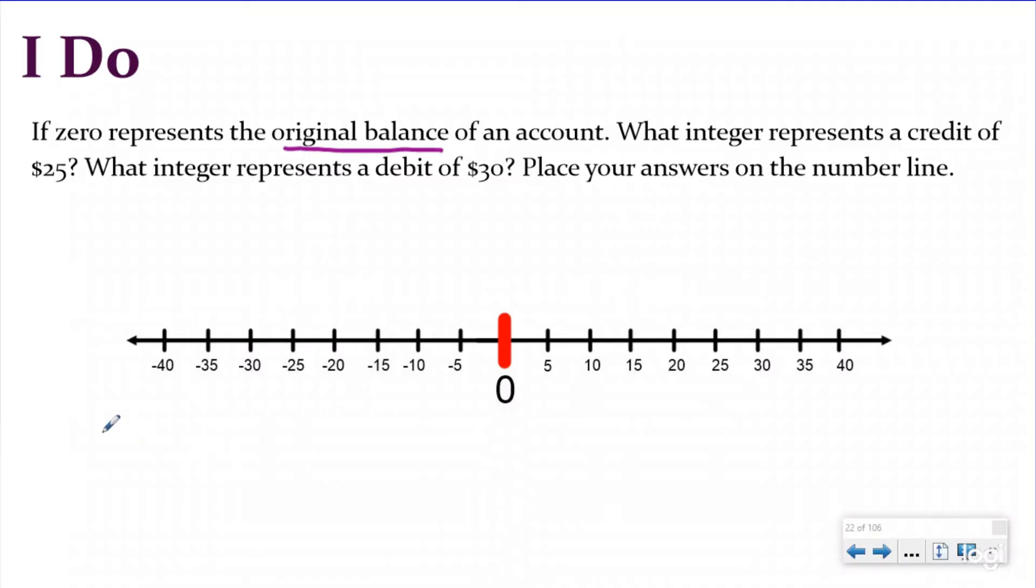If you added a credit of 25, that would be a positive 25 because you're going to be adding money to the account. And so you would do five, 10, 15, 20, 25, and you would mark that as a positive 25.